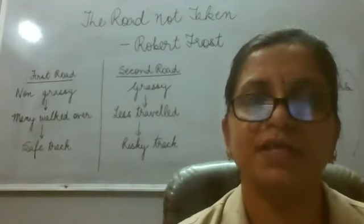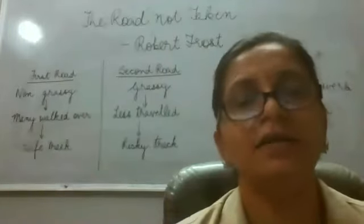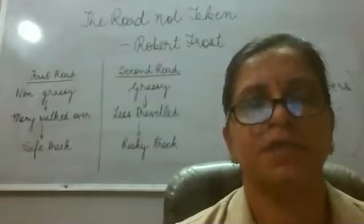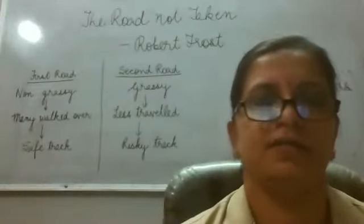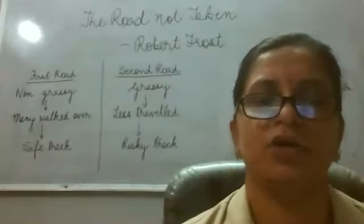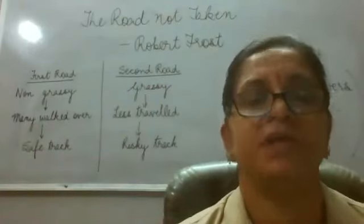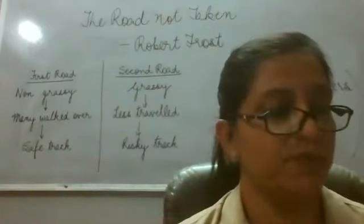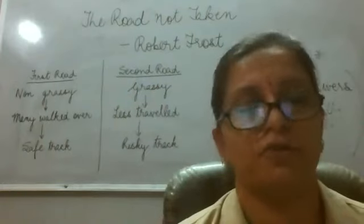All the poetic devices are to be written on the left-hand side, and the meanings on the right-hand side in your textbook. Other explanations, summary, and question and answers we shall do tomorrow. Right now, I'm beginning with the explanation of the poem, The Road Not Taken by Robert Frost.